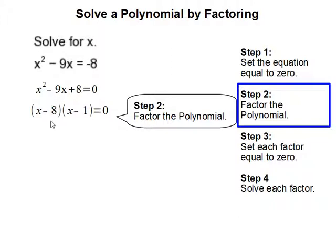In this case, it will be negative 8 and negative 1. Negative 8 times negative 1 equals 8. Negative 8 plus negative 1 equals negative 9.